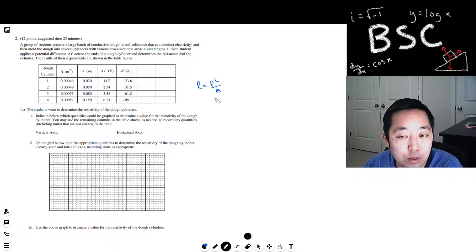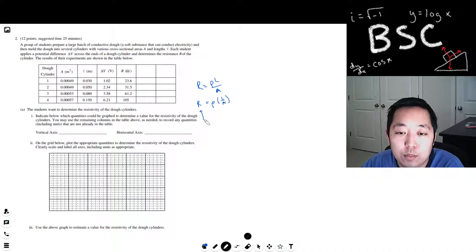That's always the approach that they're asking for in these questions, whether or not you think it's the best approach. If I write this as R equals rho L over A, rho would be the slope if I plotted this as my Y and this as my X, because then it would be Y equals MX where M is the slope.